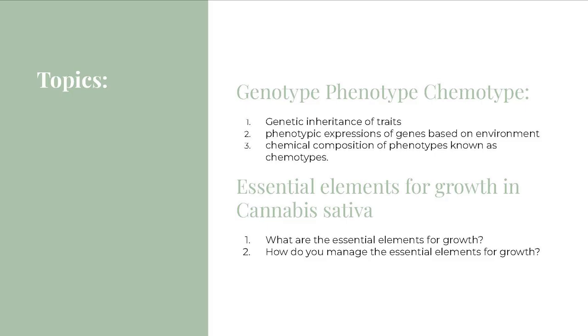In our first session we're going to talk about genotype, phenotype, and chemotype. Your genotype is the genetic inheritance of traits. Your phenotype is the expression of those genes based on the environment. The chemical composition of those phenotypes is also known as what people call chemotypes.